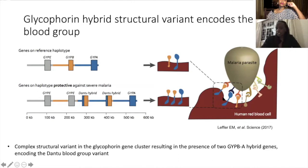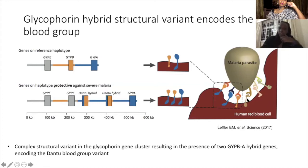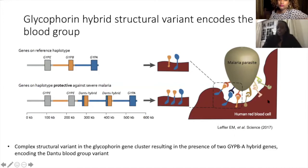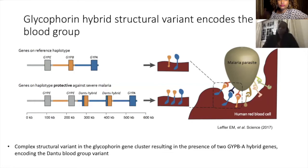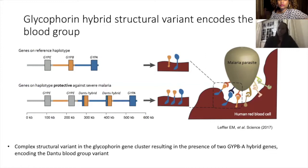Glycophorins are important invasion molecules on the red blood cell. Normally, when a parasite encounters a red blood cell, it has ligands on its surface that recognize these invasion molecules and uses them as an invasion pathway. Glycophorin A especially is abundant on the red blood cell and is an important invasion molecule. We were curious about what happens when the parasite encounters this hybrid DANTU molecule — does it impact parasite invasion, and what is the effect of this fusion molecule on red blood cell structure?